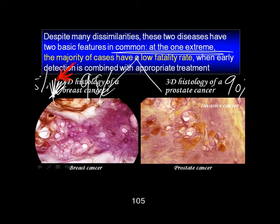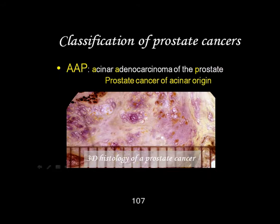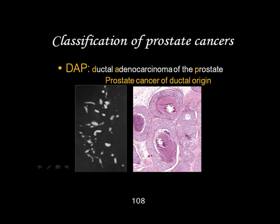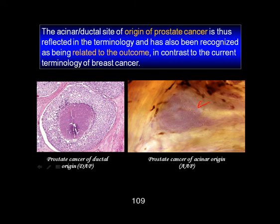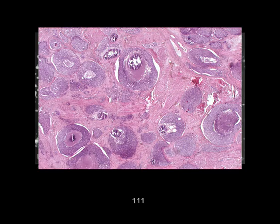So when you see a stellate lesion on the mammogram, why does your pathologist call it invasive ductal carcinoma? It has nothing to do with the ducts. The other extreme is that they call it DCIS in the breast, and they always call it invasive carcinoma in the prostate — as in acinar adenocarcinoma of the prostate, and DAP in the prostate. AAP and DAP — this is known in the literature, we just contributed to our knowledge. Prostate DAPs are large, advanced, with early recurrence. Bad news.